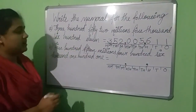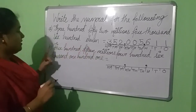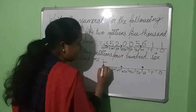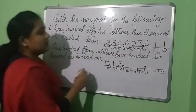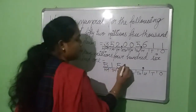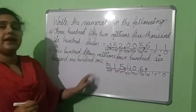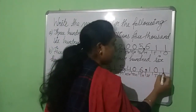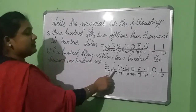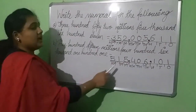The next number is five hundred fifteen million, four hundred six thousand, one hundred one — 515,000,000; 515,000; 406,000; 101. Let's read this number: 515,406,101.